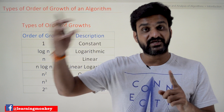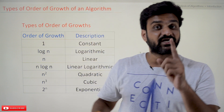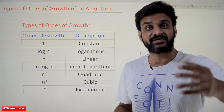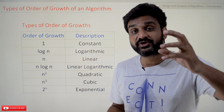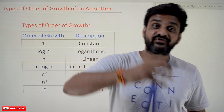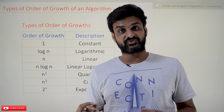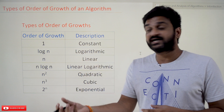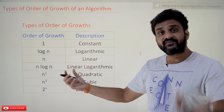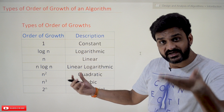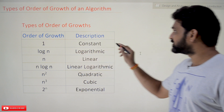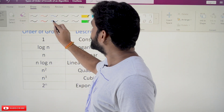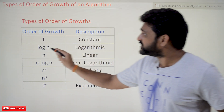For a thousand inputs, the number of times that algorithm will get executed is also one — not necessarily exactly one, it may be three steps or four steps, but those steps are going to be constant for every input given to that algorithm. So that is what we call it as constant order of growth — the efficiency of that algorithm is constant every time we change the input.